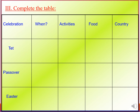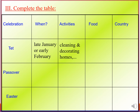Tet occurs in late January or early February. Activities: cleaning and decorating homes. Food: sticky rice cakes. Country: Vietnam. Tết diễn ra vào cuối tháng Giêng hoặc đầu tháng 2. Hoạt động là dọn dẹp và trang trí nhà cửa. Món ăn đặc trưng là bánh chưng. Quốc gia: Việt Nam.